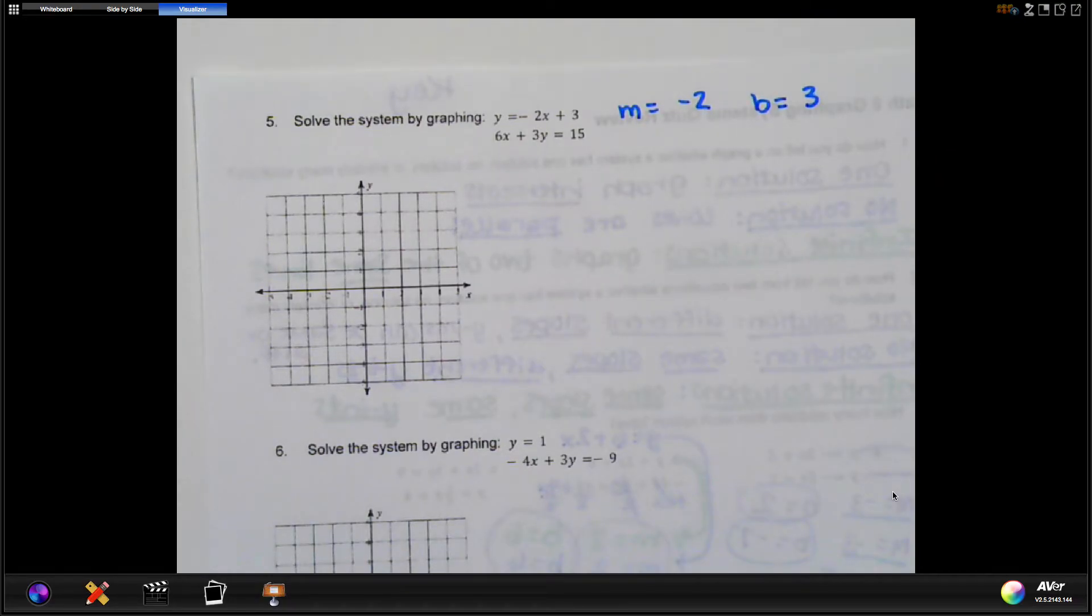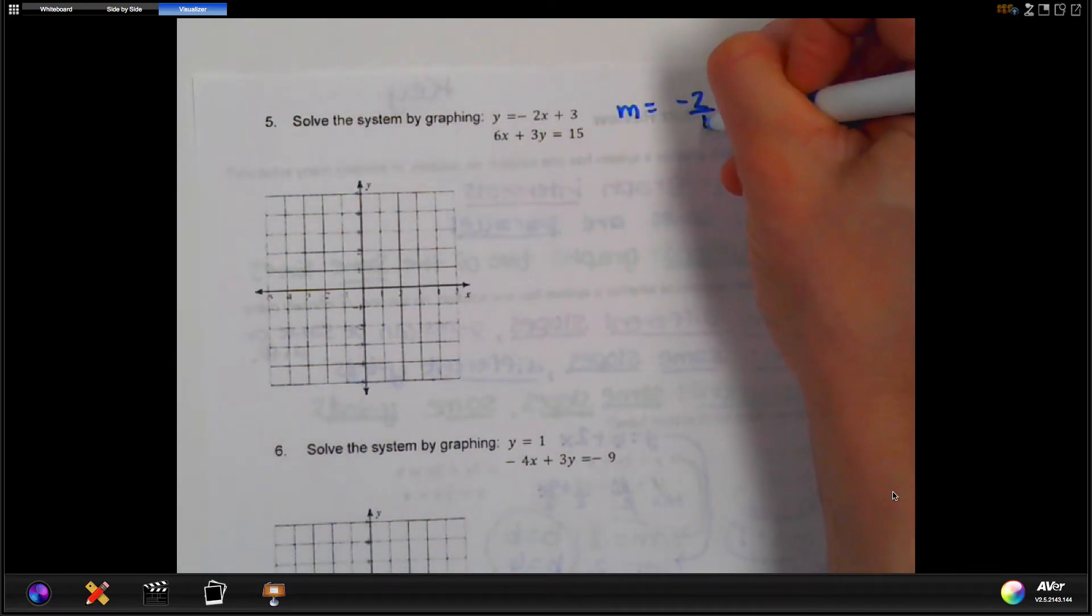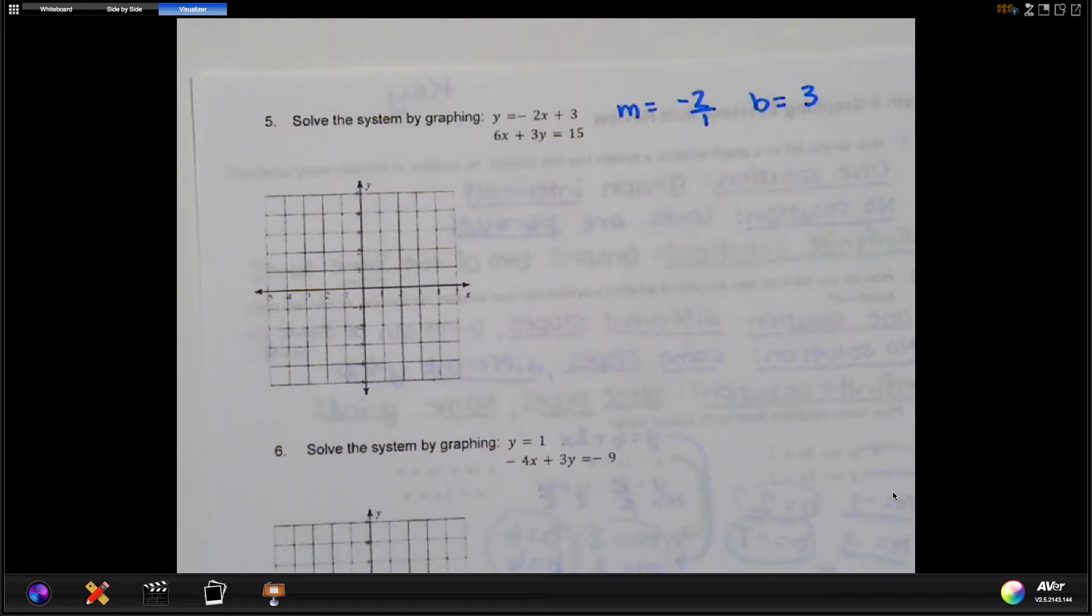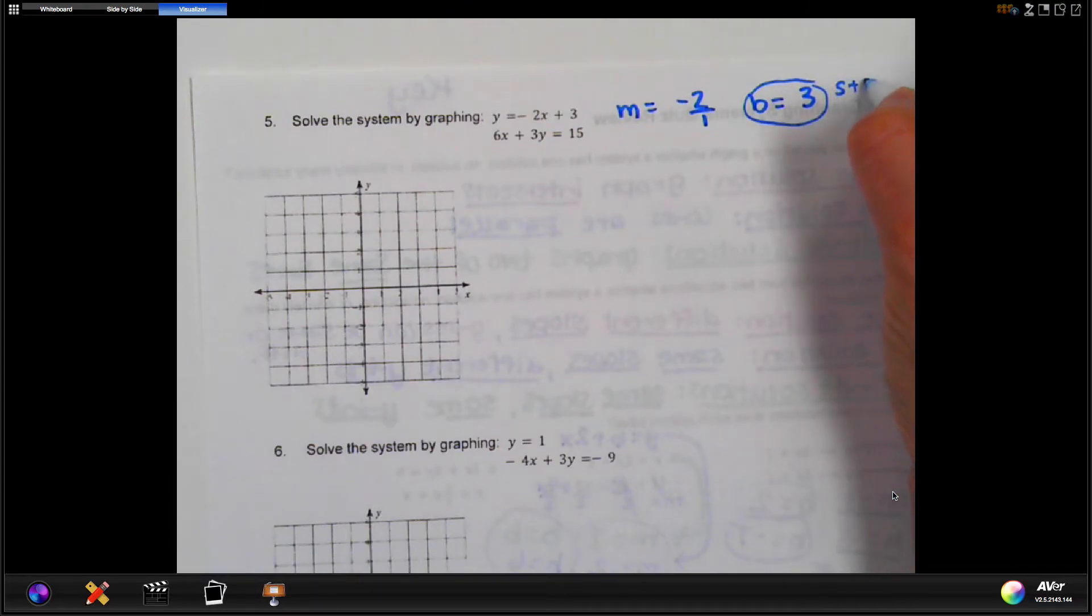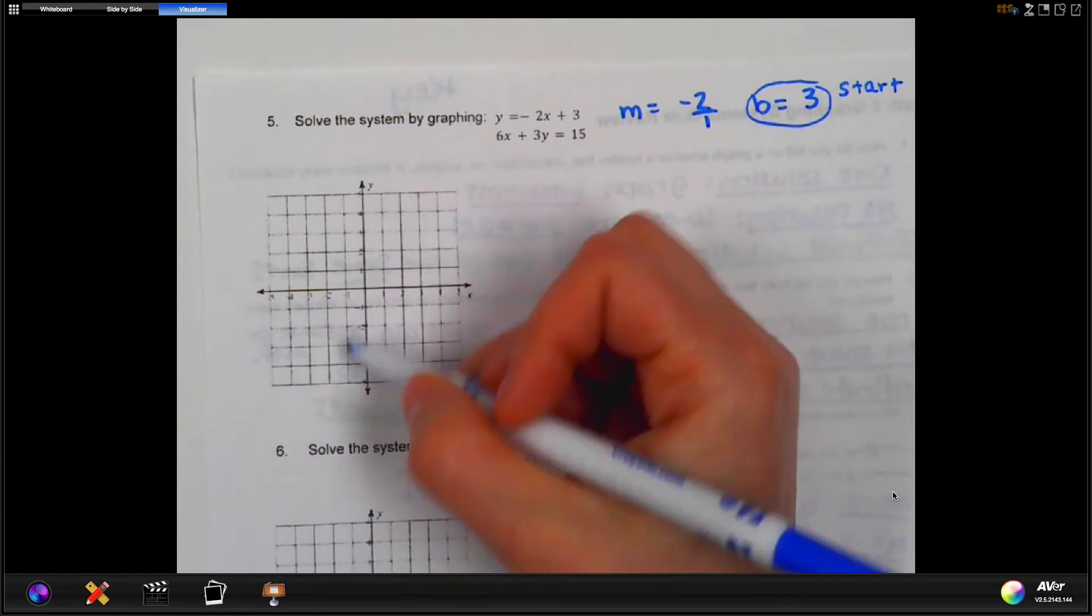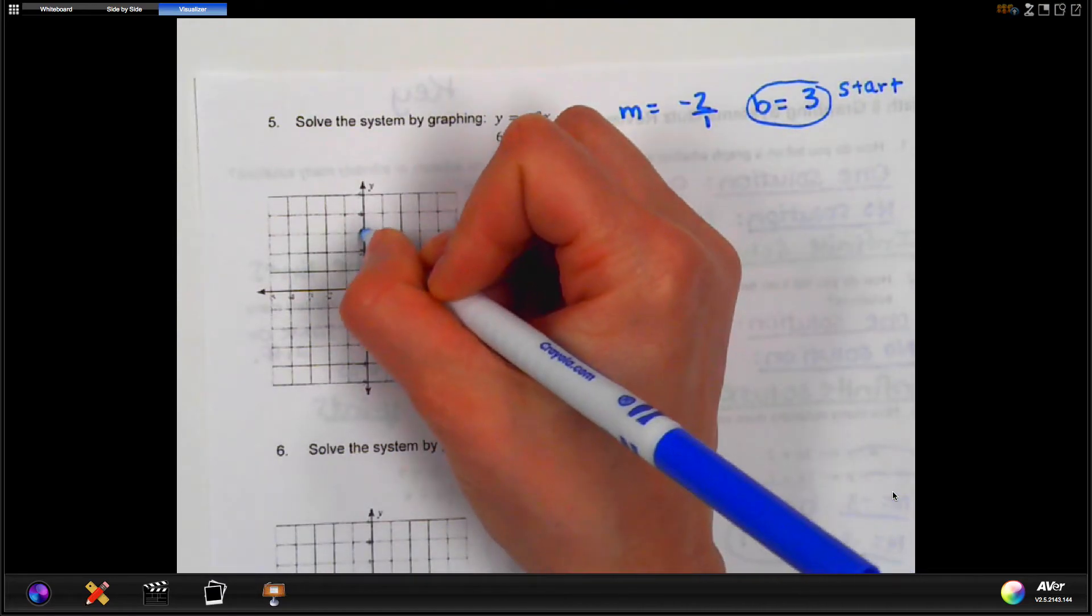Since I'm graphing this, though, I want my slope to have a rise and a run, so I'm going to make that negative 2 over 1. Okay, where am I going to start my first graph? I always start, remember, at b. So this is where I'm going to start. So I'm going to go on my y-axis here, and I'm going to go to positive 3, and I'm going to make a dot there.